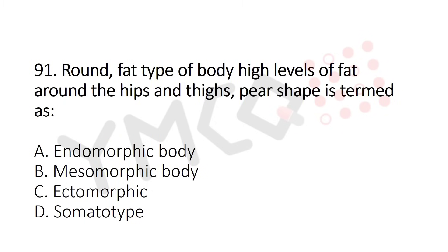Question 91: Round fat type of body with high levels of fat around the hips and thighs — pear-shaped — is termed as — option A: endomorphic body, option B: mesomorphic body, option C: ectomorphic body, option D: somatotype. The answer is option A: endomorphic body.